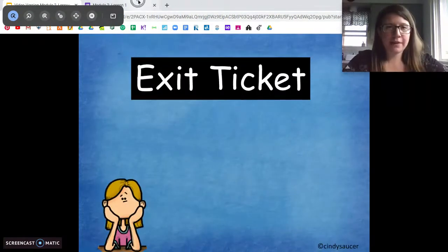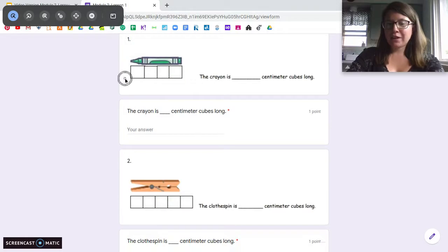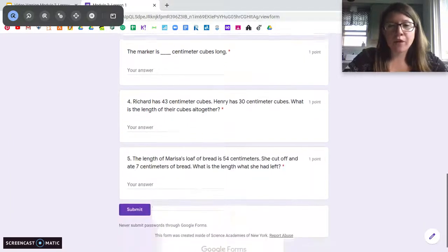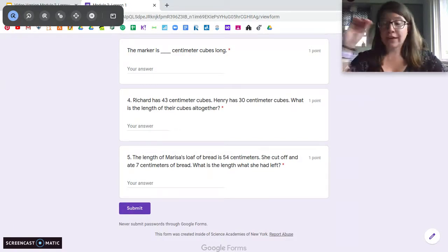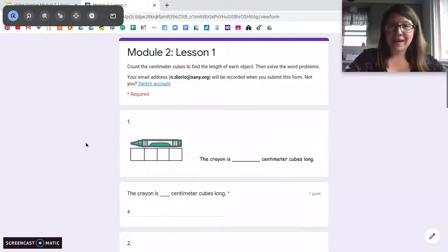All right. Here's your exit ticket for today. I think you're going to like this one. For this one, I show you a picture and it's already measured for you. All you got to do is make sure it's measured correctly first. If it's not measured correctly, let me know. But count the centimeter cubes. So this crayon is one, two, three, four centimeter cubes long. Just type in the number. So you have three problems like that. And then on the bottom, there are two word problems, kind of like the word problem that we did today. Read it all the way through. Decide if you're adding or subtracting based on the question. Don't just add the numbers together because that might not be what to do. Read it and decide. And then you're going to type your answer in here. And that's it for lesson one of module two. We'll come back with more measuring tomorrow.